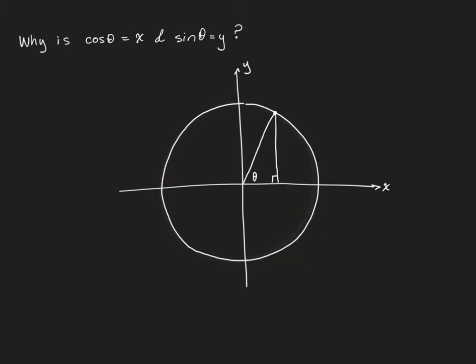If I label the sides of this triangle x, y, and r, then we can see that the sine of theta is just y over r. The cosine of theta is x over r.